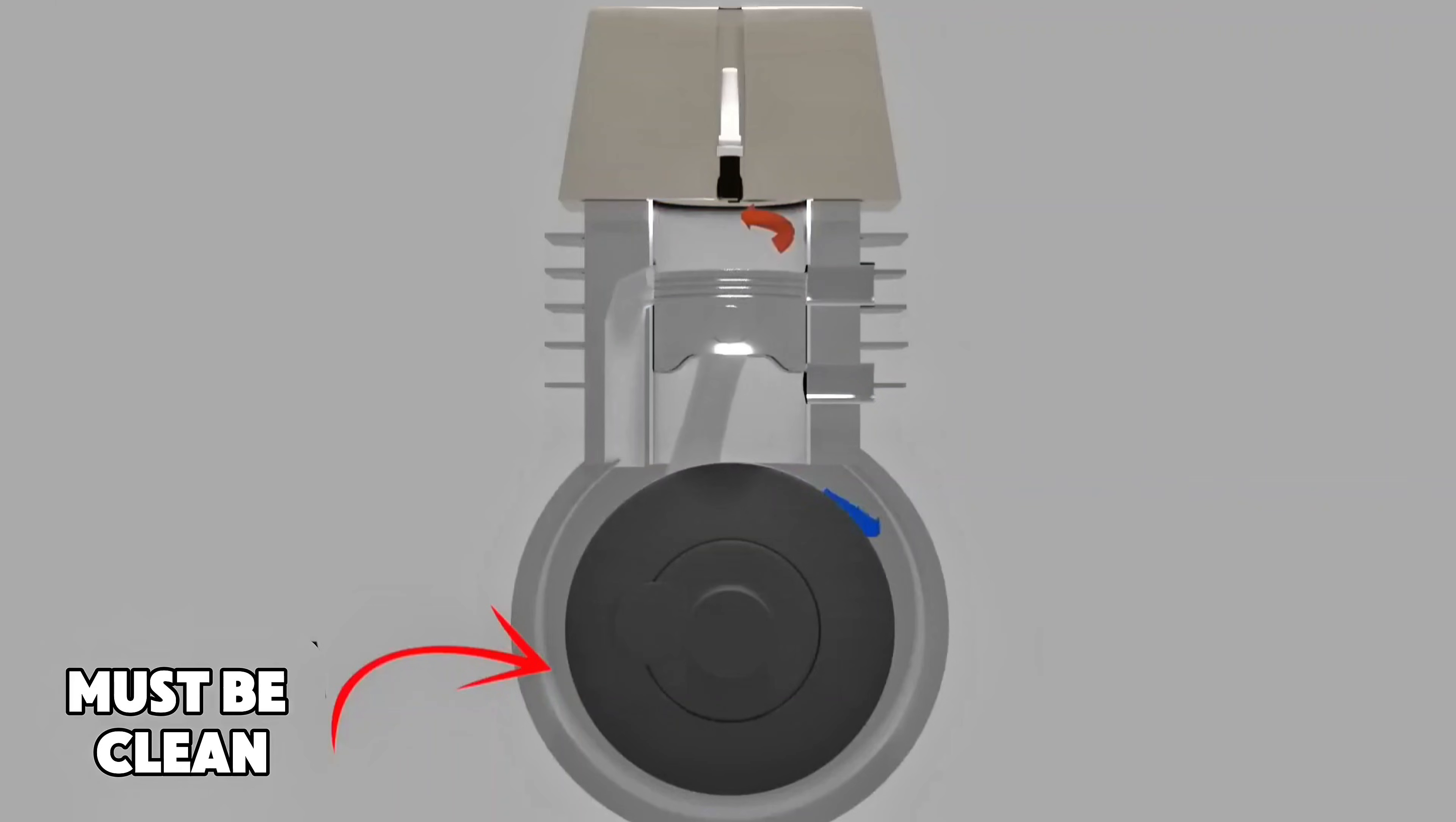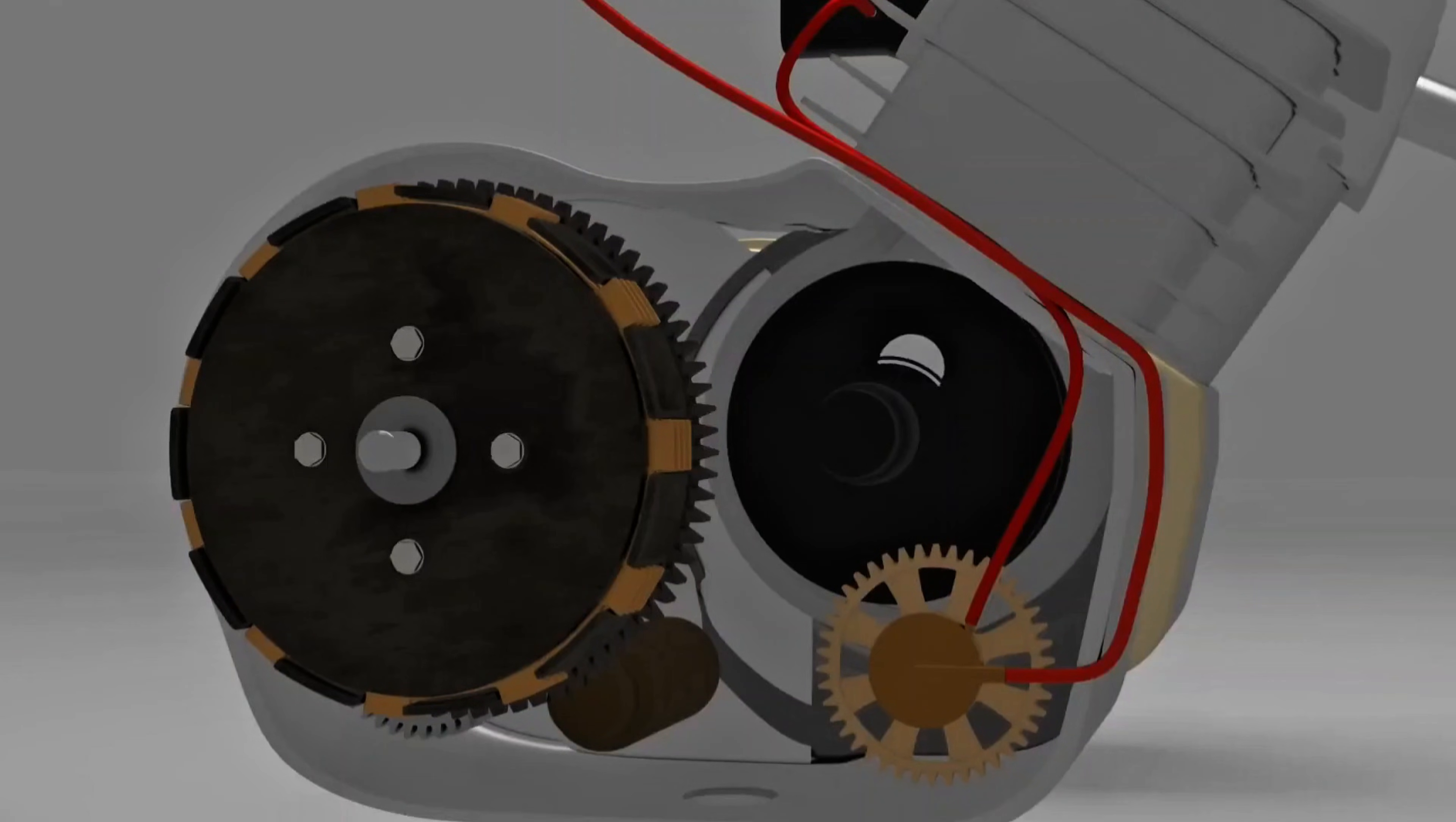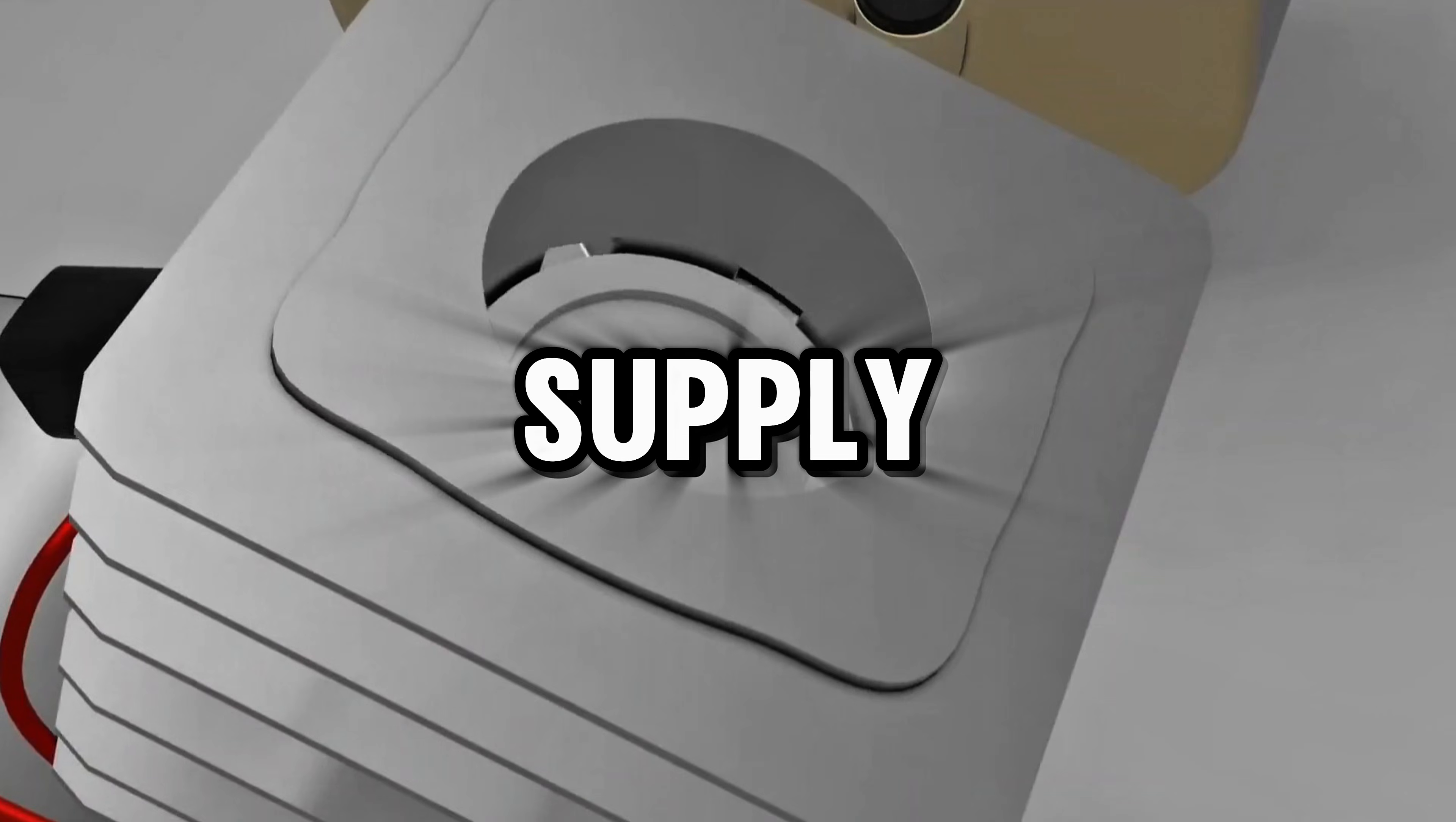Since the crankcase is part of the combustion mechanism in a two-stroke engine, it must remain clean and free of oil. If oil were present, it would be carried along with the airflow into the combustion chamber, quickly depleting the oil supply.